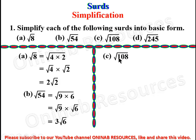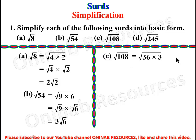Now square root of 108. Dividing 108 by 2 gives us 54, and 54 divided by 3 gives us 36. So 108 is 36 times 3. We have it as square root of 36 times 3, then separate: square root of 36 times square root of 3. Square root of 36 is 6, so the result is 6 root 3. That is the basic form of square root of 108.